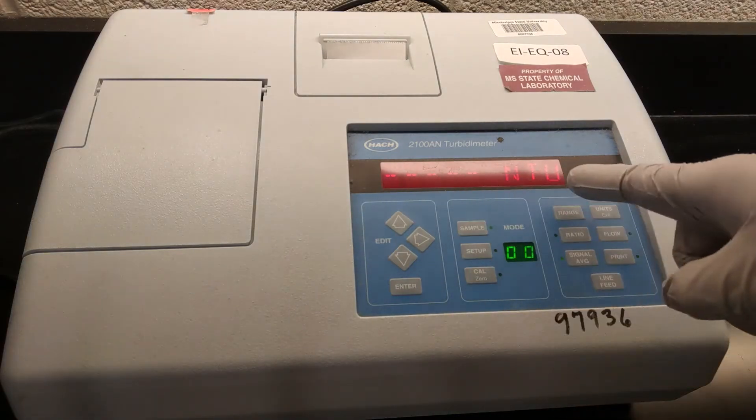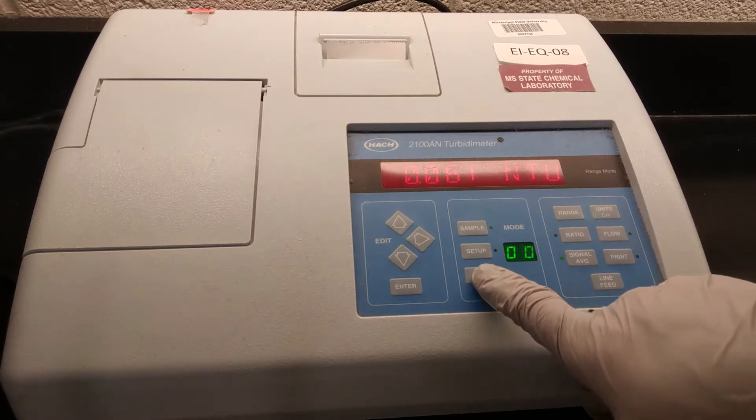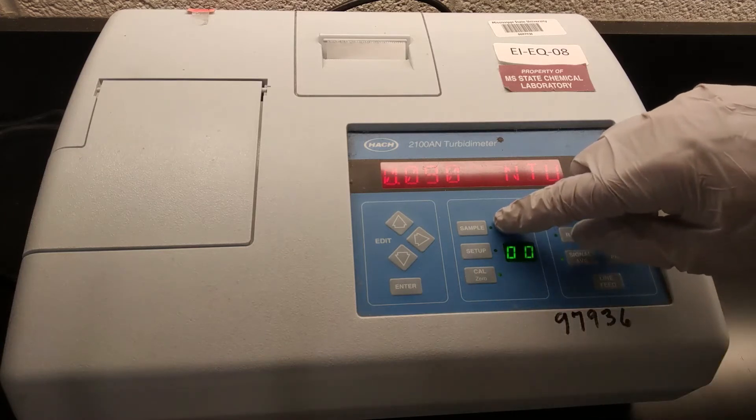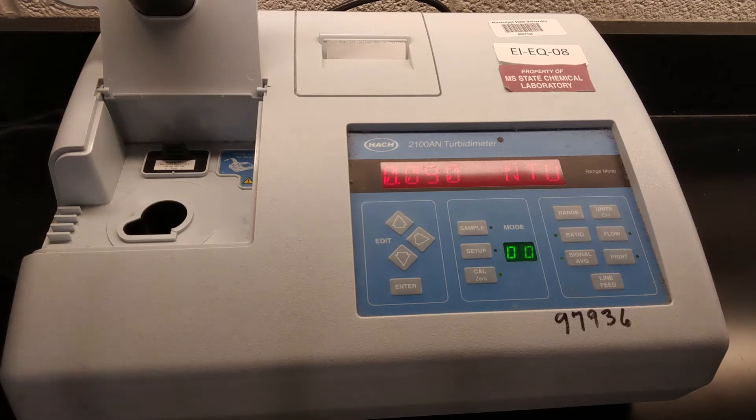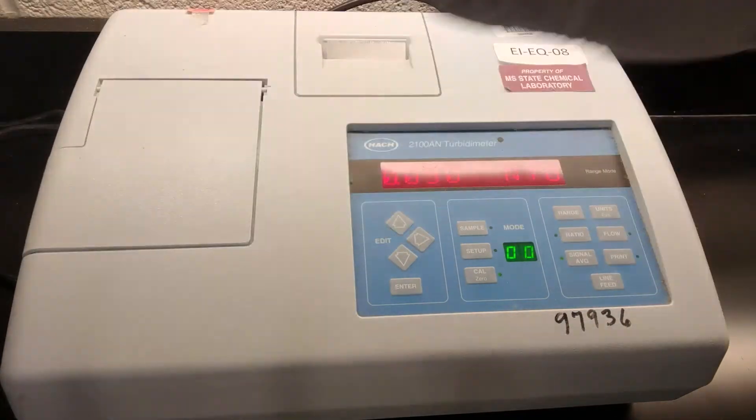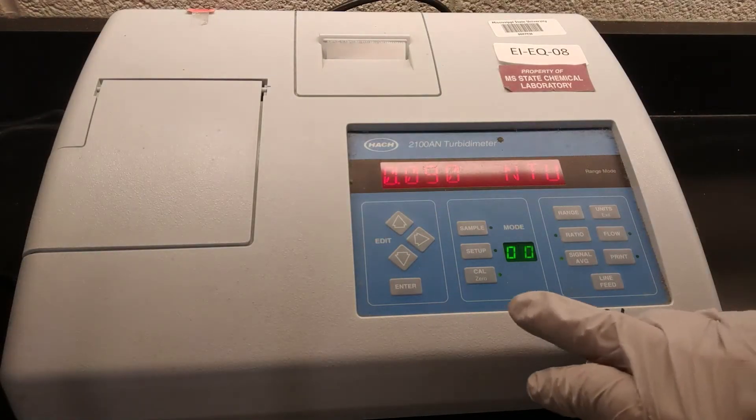So when you see this show up on the little screen, the dashes and then NTU, that's how you know it is about ready to get started. Now it's measuring. It's saying in the cell, I'm seeing 0.061 NTU. So to calibrate, we want to hit this calibrate button. You can see the LED switched from sample to calibrate. And then we're going to put our low standard in, being careful not to touch the sides, close our bay door and calibrate.